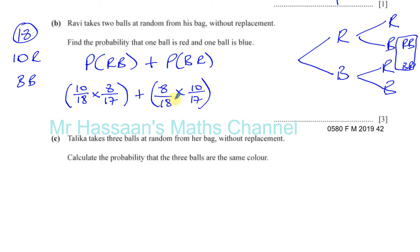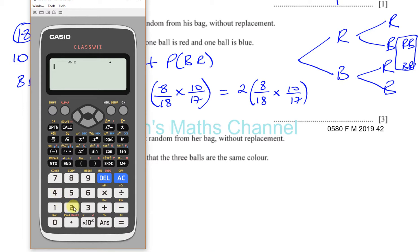So these are the two separate outcomes we're considering. One is a red first and then a blue, and the second one is a blue first and then a red. What you'll notice is that both of these will give you the same value. So this is like 10 times 8 over 18 times 17, and this is 8 times 10 over 18 times 17. So you get the same value. So you can just take one of them and multiply by 2. So 2 times 8 over 18 times 10 over 17. You can write it exactly as it looks here: 8 over 18, then we have to multiply 10 over 17. And that gives you 80 over 153.